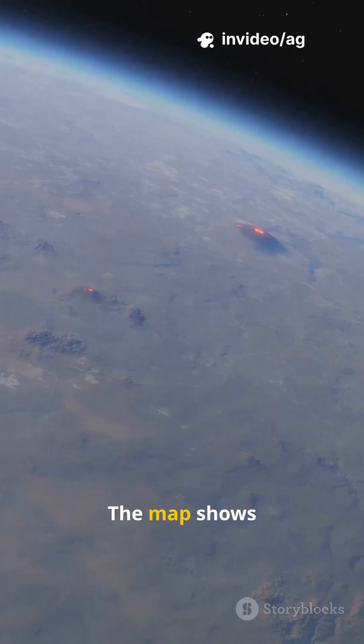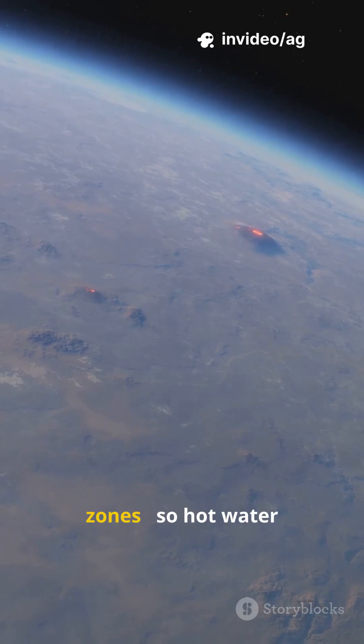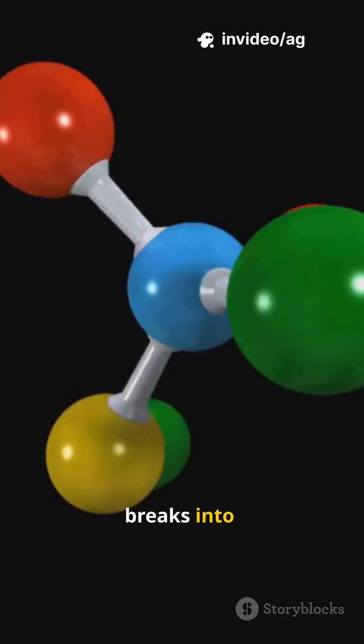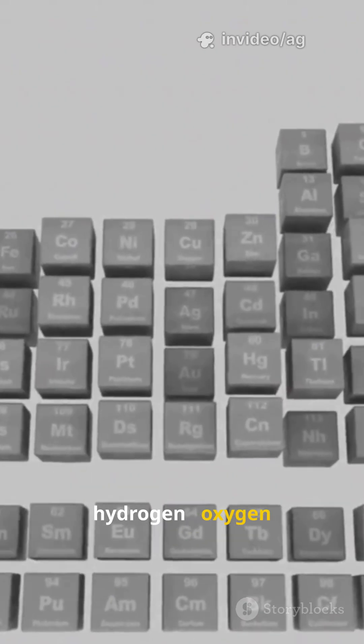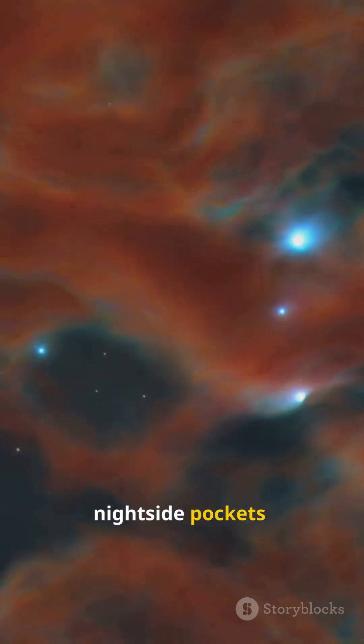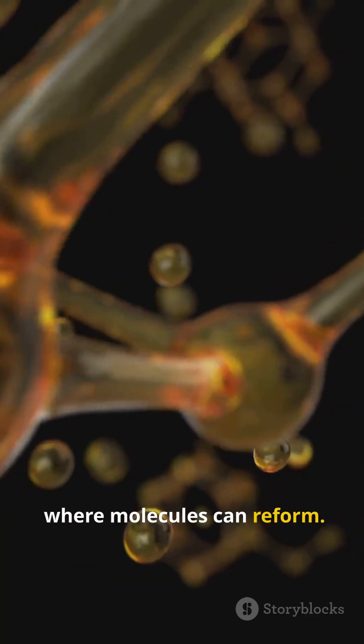The map shows blistering dayside zones so hot water breaks into hydrogen, oxygen and cooler nightside pockets where molecules can reform.